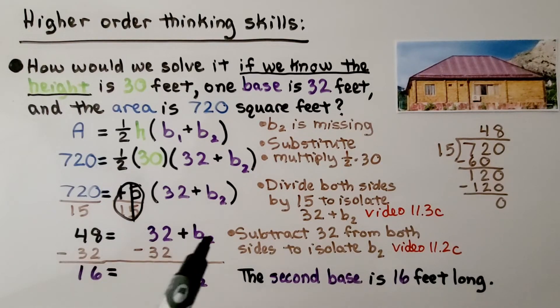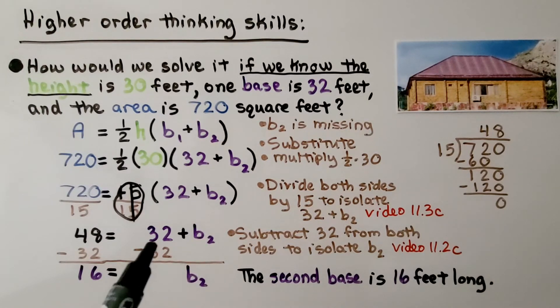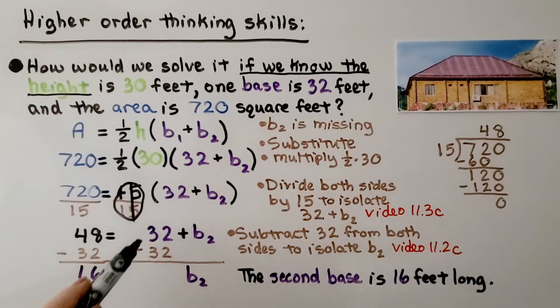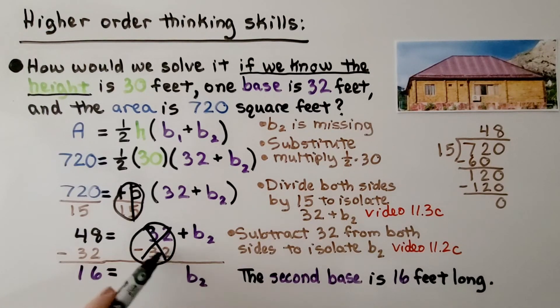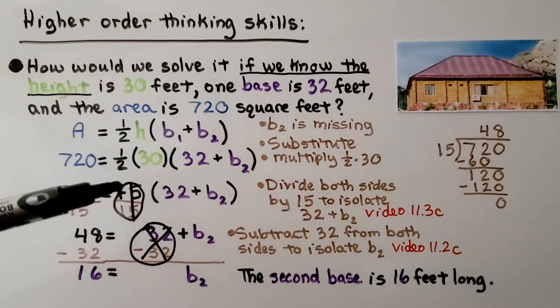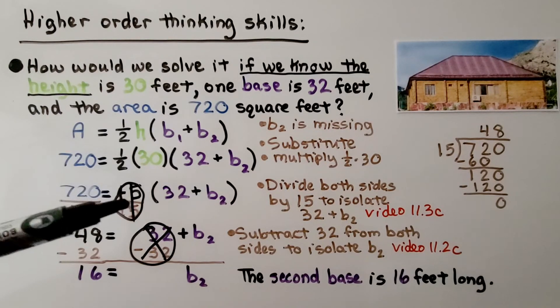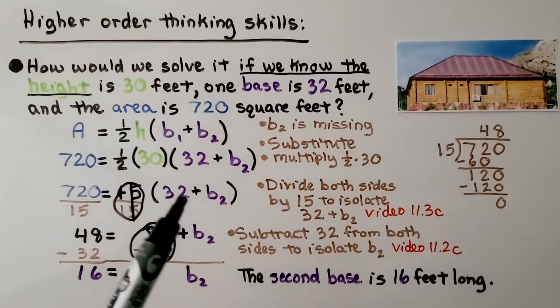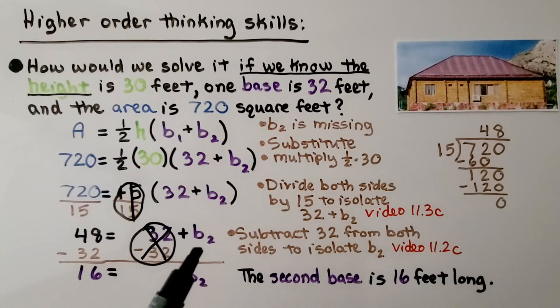Now this is what our equation looks like. We can use properties of equality and subtract 32 from both sides to isolate this b sub 2. This creates a zero pair and eliminates it. Now we have 16 is equal to the second base. The second base is 16 feet long. We got rid of this 15 by dividing both sides. Then we use subtraction, and now this b sub 2 is by itself, and we know that it's equal to 16.